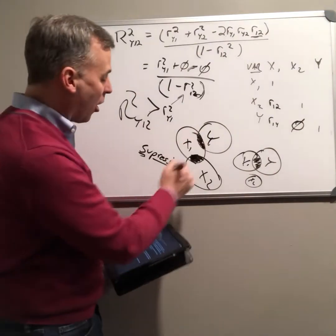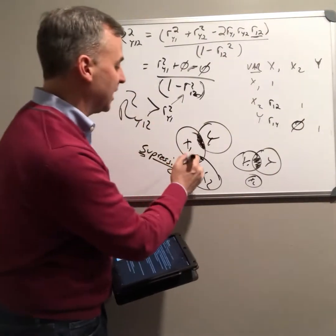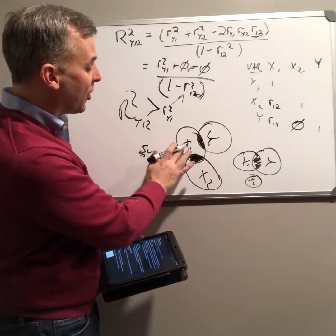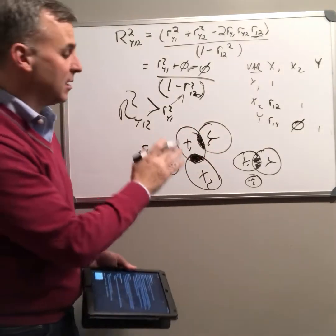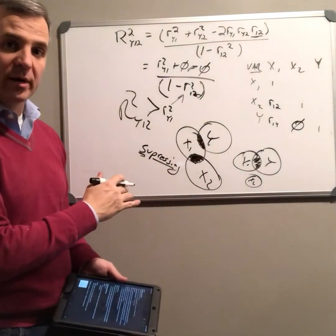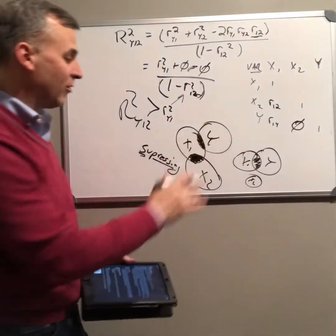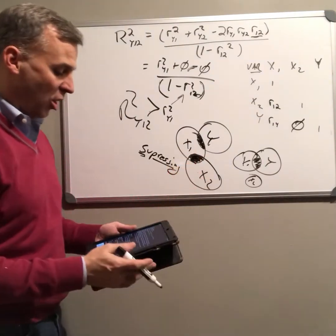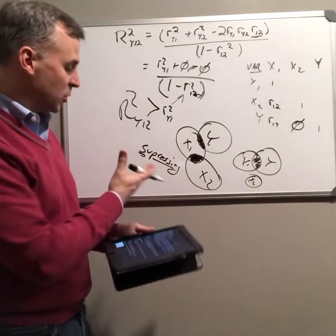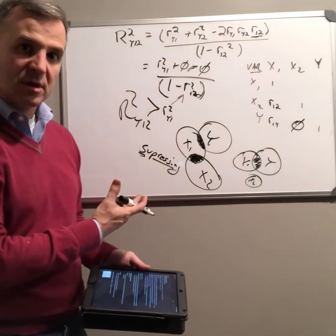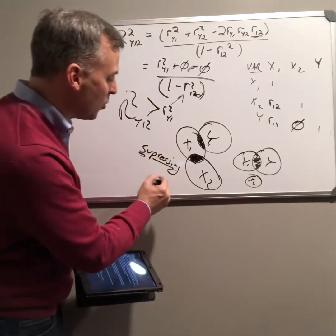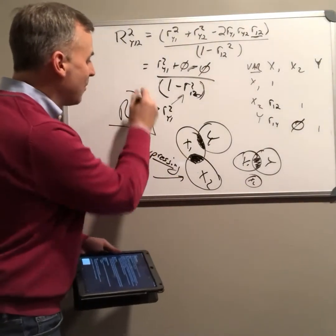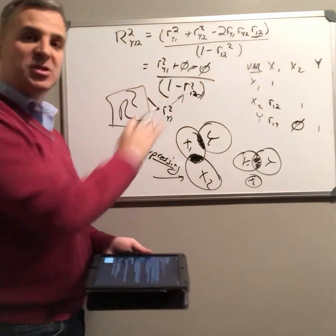So now r squared, the percentage of variance explained, is the percentage of variance explained by the part of x1 that's interesting, not by all of x1, divided by the total variance that exists. This is then what we call a suppressor variable, or sometimes we call it a confound.